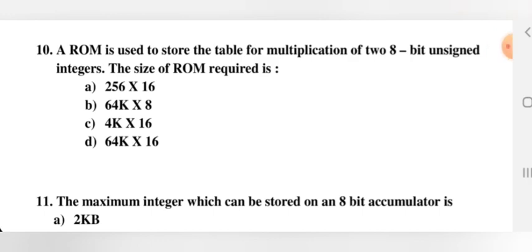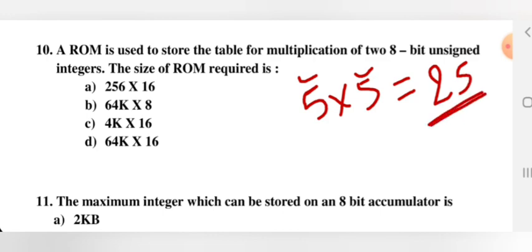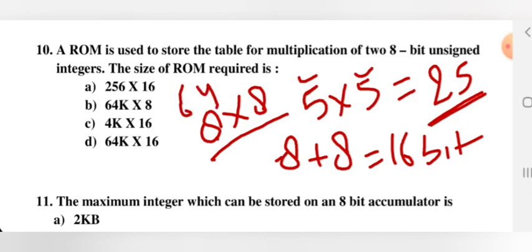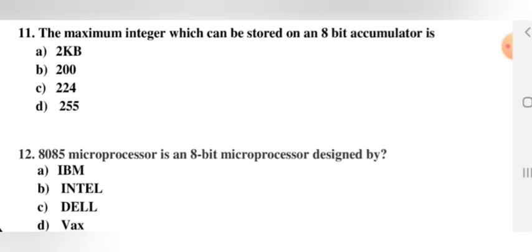Next question: a ROM is used to store a table for multiplication of two 8-bit unsigned integers. What is the size of ROM required? When multiplying two 8-bit numbers, the result can be up to 16 bits. Address lines = 8 + 8 = 16, and data lines = 16. So the ROM size is 2^16 × 16 bits = 64K × 16. Option D is the right answer.